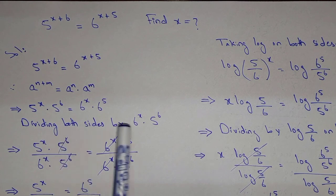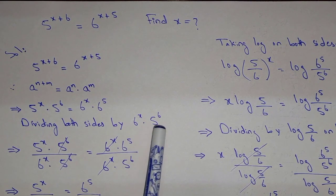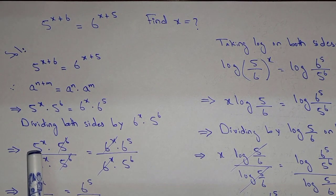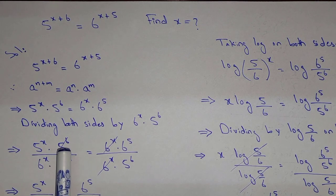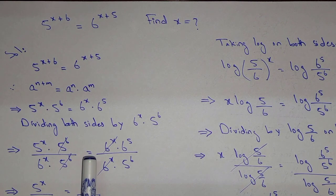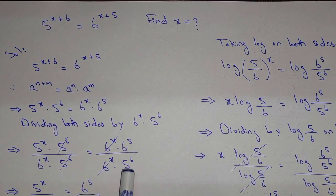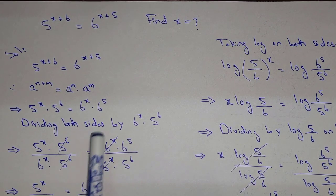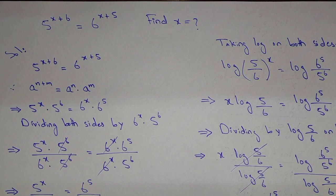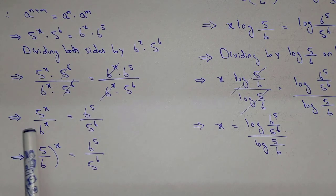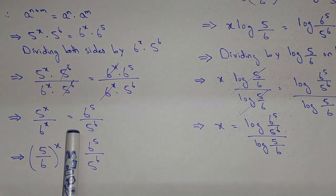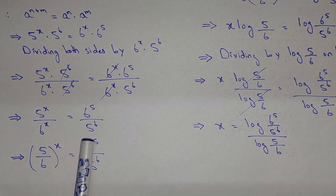Now dividing both sides by 6^x · 5^6: we have (5^x · 5^6) / (6^x · 5^6) = (6^x · 6^5) / (6^x · 5^6). The 5^6 terms cancel on the left and the 6^x terms cancel on the right, giving us 5^x / 6^x = 6^5 / 5^6.